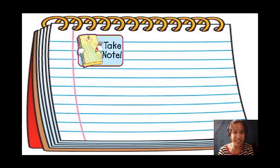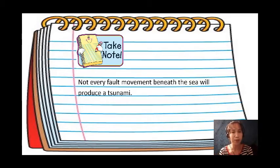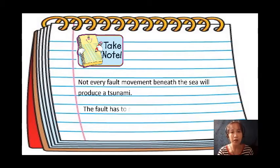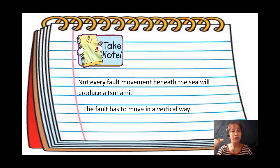Take note: not every fault movement beneath the sea will produce a tsunami. Faults that move in a horizontal direction or sideways will not result in a tsunami — recall our previous discussion on the different movements of faults. In order to produce a tsunami, the fault has to move in a vertical sense. There will be no tsunami if the fault movement is horizontal or sideways; there will be a tsunami if the fault movement is vertical.